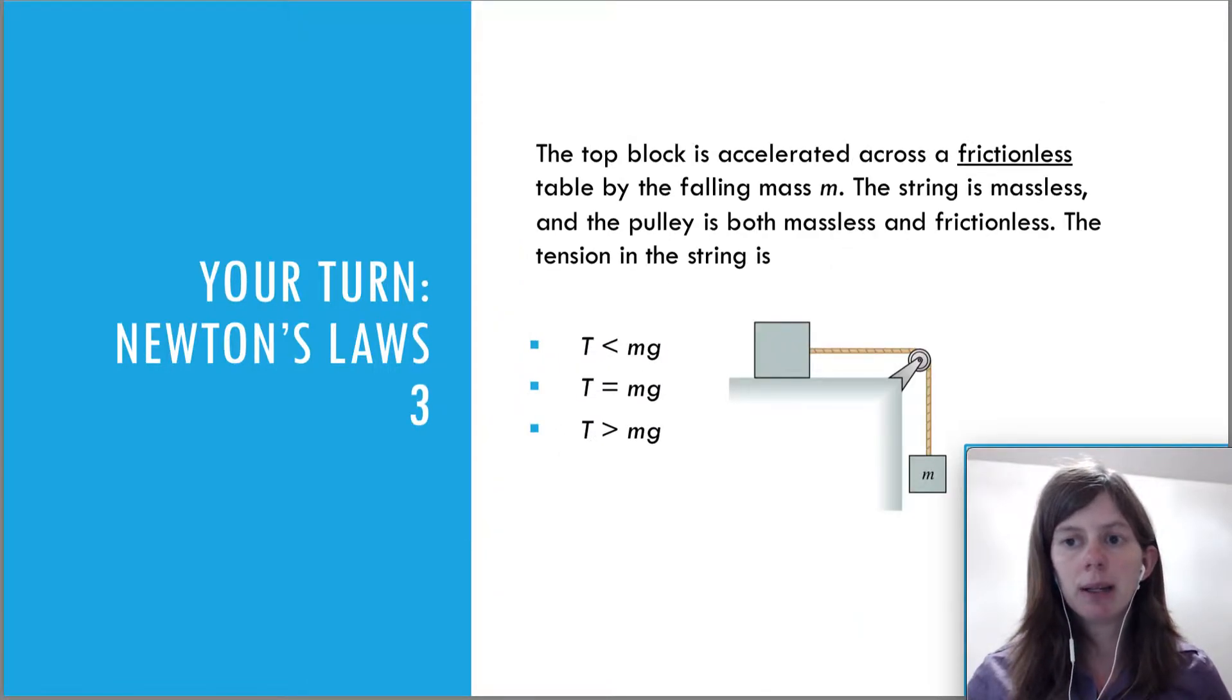The top block is accelerated across a frictionless table by the falling mass m. The string is massless, the pulley is both massless and frictionless. It only says this because later we'll deal with instances where the pulley is actually going to affect the motion. But for right now, we're going to pretend that this pulley does not affect the motion. It just makes the string bend, but it does not slow down the motion or anything. So what's the tension in the string? So again, we can do this just thinking of it conceptually, and then I'll show you the equations as well.